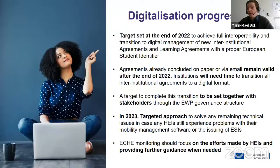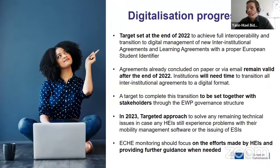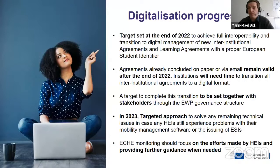The question is often raised of what happens to those agreements concluded on paper or via email before the end of the year. The answer is that they remain valid for their duration. We know that institutions will need time to transition these agreements to digital ones. This is why we are not setting a date now for this transition — we want to first sit and listen to everyone, to the stakeholders, and this will be done through the Erasmus Without Paper governance structure.